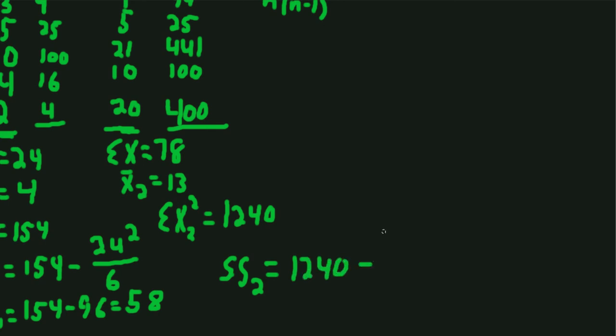So now we can calculate the sum of squares for group 2, which will be 1,240 (sum of the squared X's) subtract the sum of X squared, which is 78 squared over n, which here is 6. If you take 78 squared, we get 6,084 divided by 6, we get 1,014.